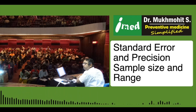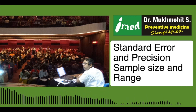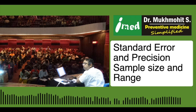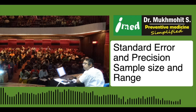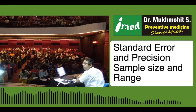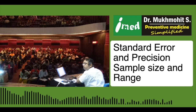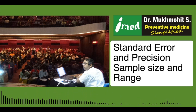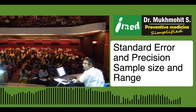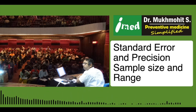The take-home message is: as the sample size increases, as the number of observations increases, the chances of getting erroneous results will decrease. There is a phenomenon of regression to the mean, regression towards normalcy, which means there is a decrease in standard errors, which further means there is an increase in the precision of that particular entity.